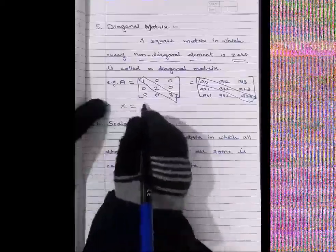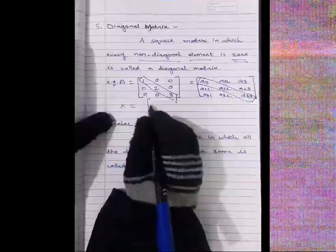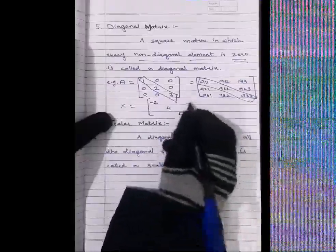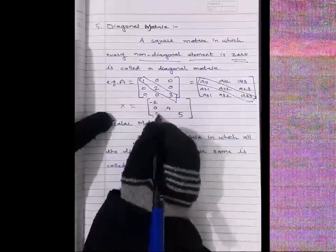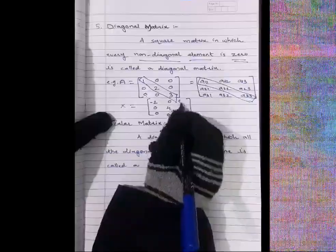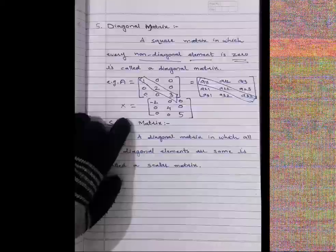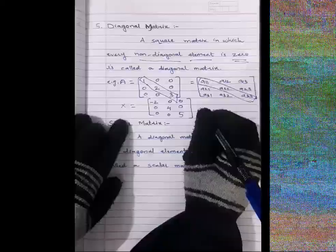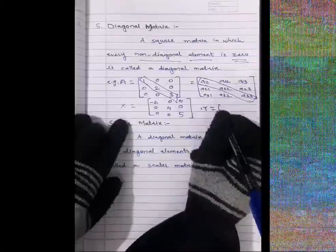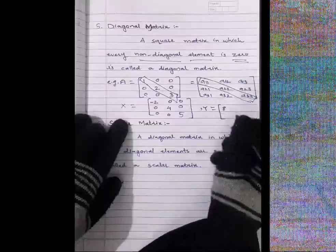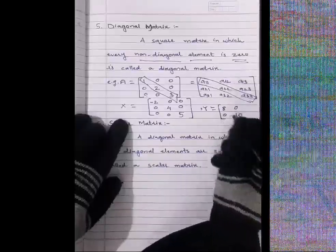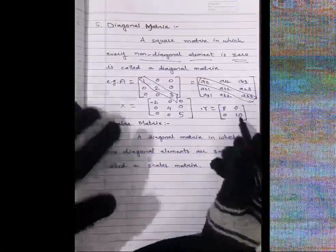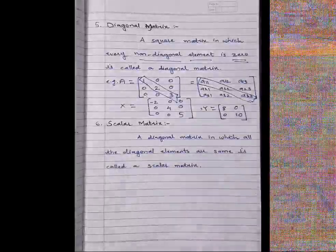Here is another example of a diagonal matrix: X equals a 3×3 matrix with diagonal elements minus 2, 4, 5 and all non-diagonal elements zero. For a 2×2 example, a matrix with diagonal elements 8 and 10, and non-diagonal elements zero, is also a diagonal matrix.